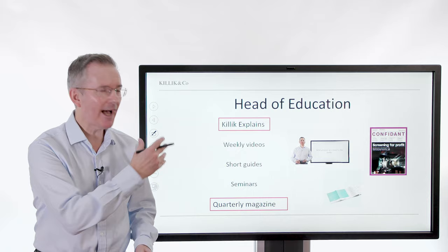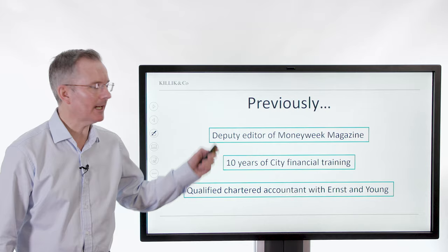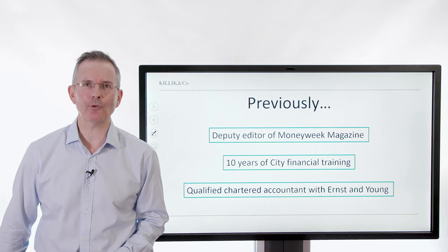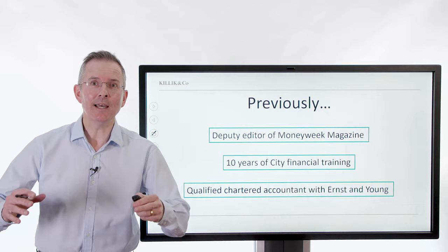That's a great portfolio of different tasks, but where did I start? Nowhere near that. Going backwards, how did I get there? I was Deputy Editor of MoneyWeek magazine. That's a slightly lateral move, some could argue. Ten years of city financial training, which is a posh way of saying teaching for professionals who work in finance. And before that, I qualified as a Chartered Accountant with Ernst & Young.